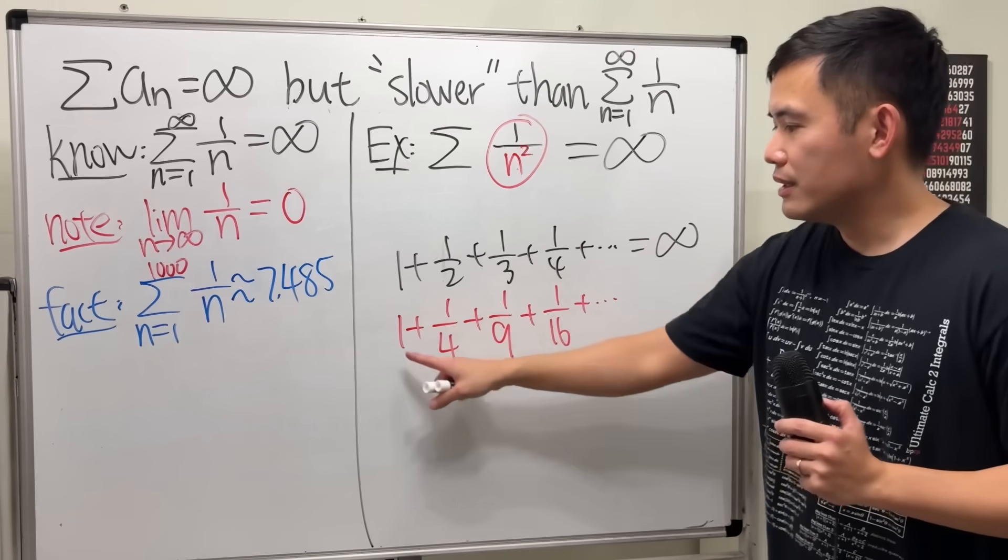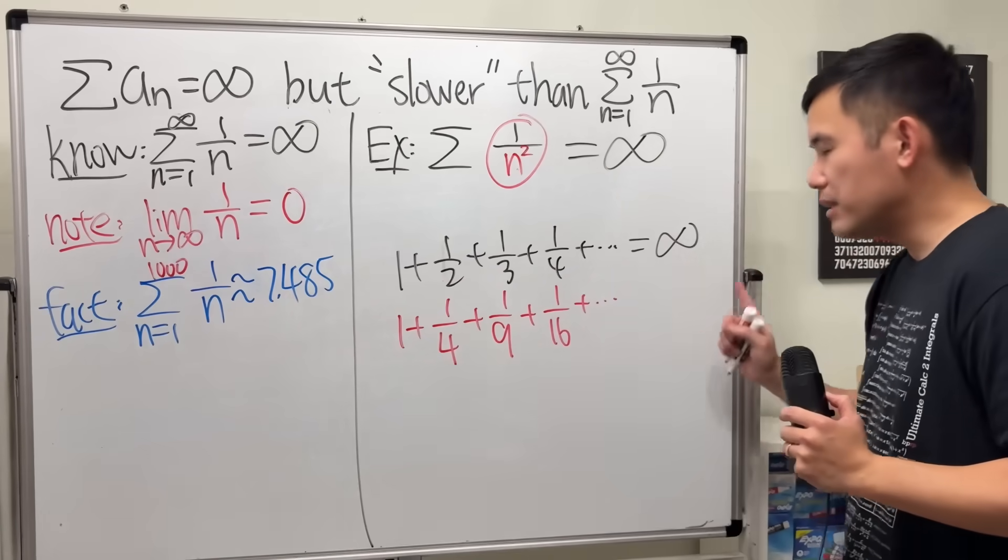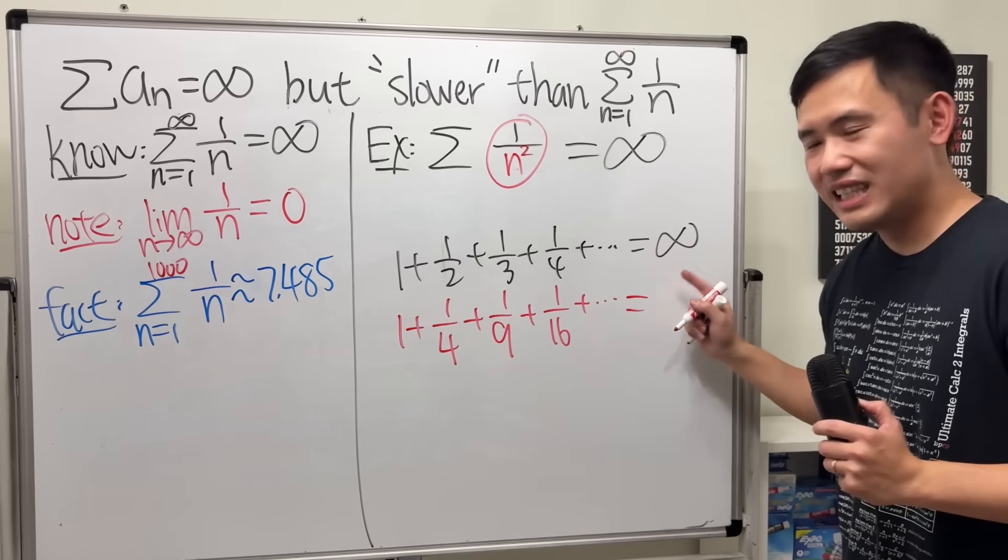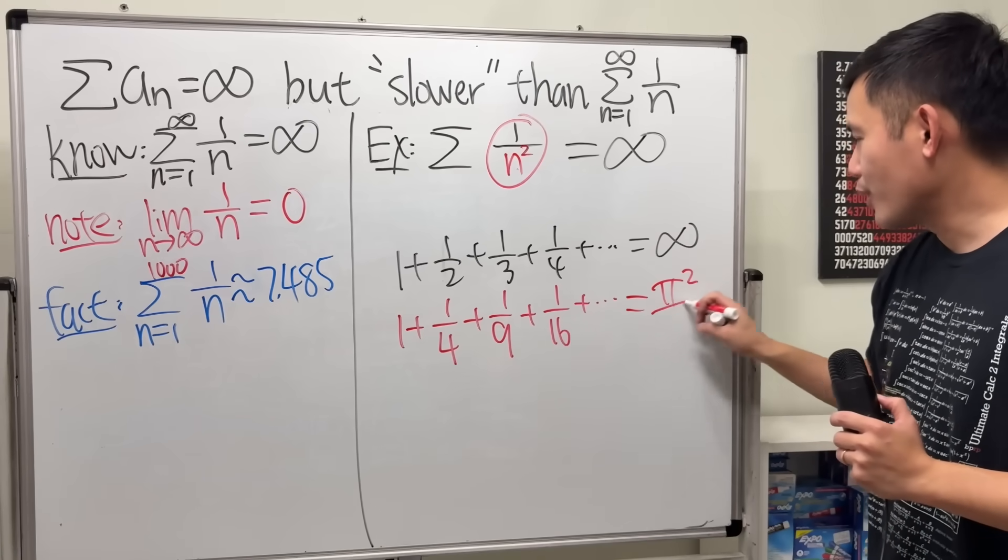let me tell you though. This right here, if you add up infinitely many terms, this doesn't give you infinity. It gives you π squared over 6.